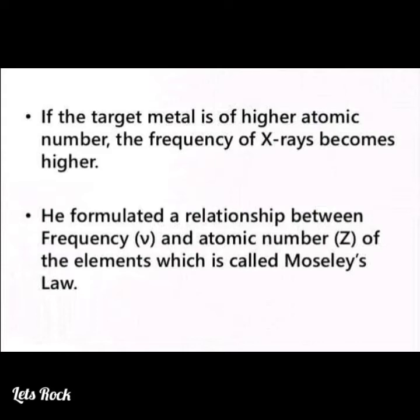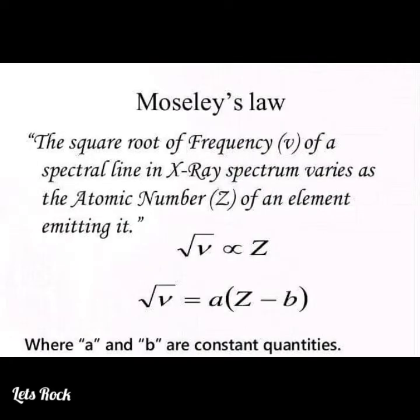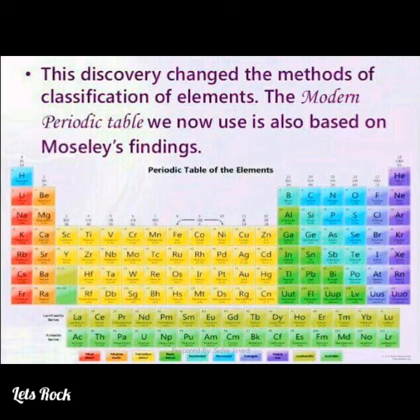Moseley formulated a relationship between frequency and atomic number of the elements, which is called Moseley's law. The square root of the frequency of a spectral line in the X-ray spectrum varies as the atomic number of an element emitting it, where a and b are constant quantities. This discovery changed the methods of classification of elements, and the modern periodic table we now use is also based on Moseley's findings.